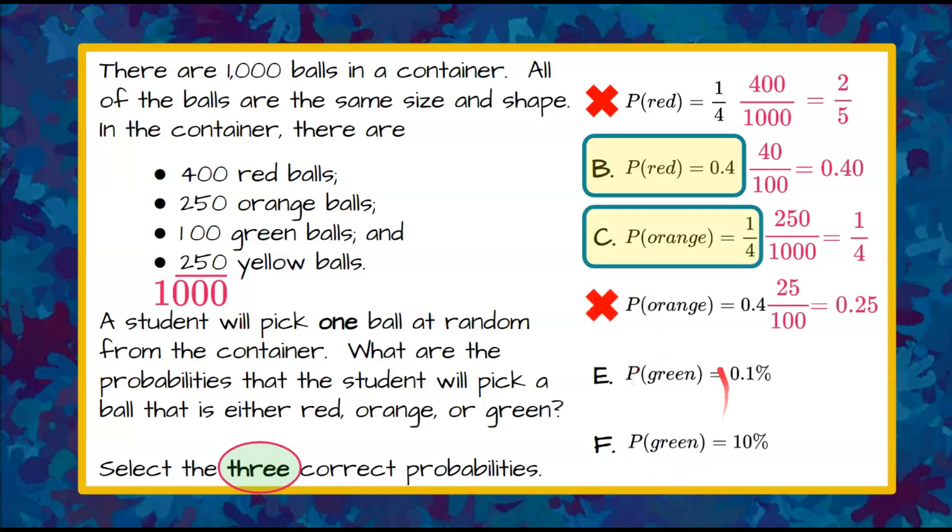Now we're looking for the probability of drawing green. There are 100 green balls out of 1,000 in the container. If I simplify this I get 10 hundredths, which equals 10% when written as a percent.